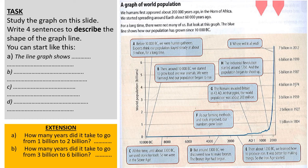I'd like you to study the graph and write four sentences to describe its shape. You can give a general pattern, then try to include some data — for example, in 10,000 BC there were just three million people living on earth. Use the information on the slide to give specific data alongside the general patterns. You can also try to give an anomaly — something that doesn't quite fit the pattern, such as the rapid increase around 1760.